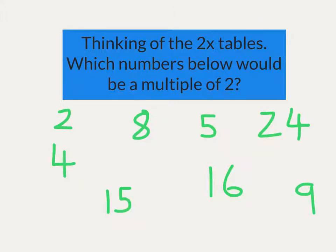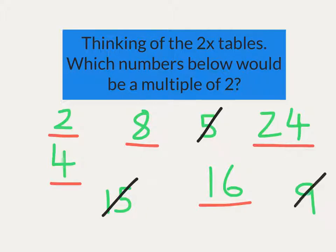So thinking of the 2 times tables, which numbers below could be a multiple of 2? Well, we're thinking back to the previous slide where we can see 2 is most certainly a multiple of 2. 4, well there's no 6, but there's an 8 which is a multiple. If we keep on going along, 24 is a multiple of 2, 16 is a multiple of 2. It will all be even numbers. However, you'll notice 5 is not a multiple of 2, 15 is not a multiple of 2, 9 is not a multiple of 2.